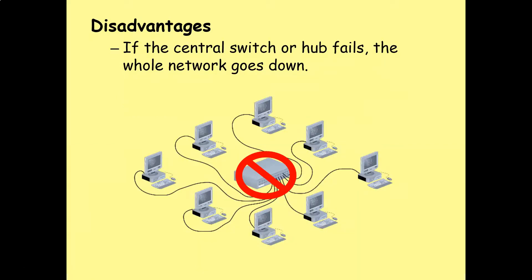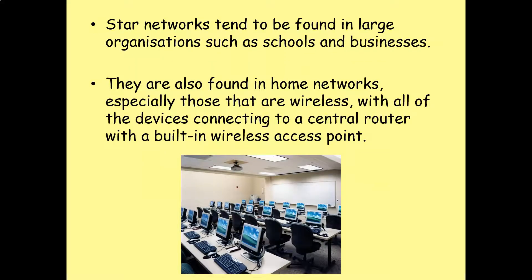The major disadvantage of the star topology is that if that central switch fails, the whole network goes down. Star networks tend to be found in large organizations such as schools and businesses. They're also found in home networks, especially those that are wireless, with all of the devices connecting to a central router with a built-in wireless access point.